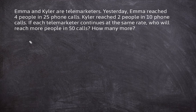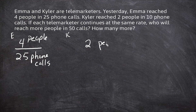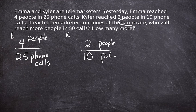The first given rate is Emma's rate: four people are reached in 25 phone calls. For Kyler, he reaches two people in 10 phone calls. These rates are going to continue at the same rate, and we need to figure out who will reach more people in 50 calls.